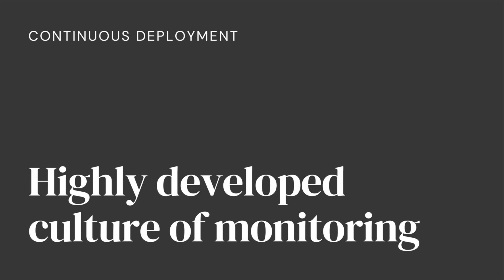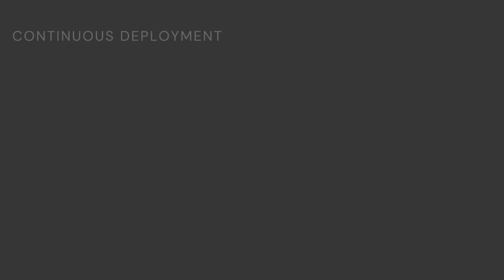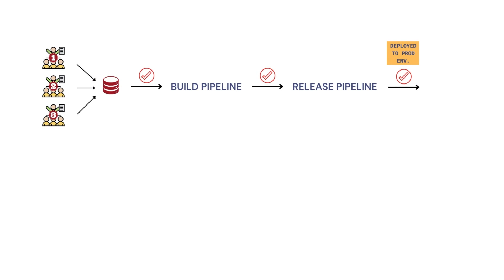With continuous delivery, the software can still be deployed to production at any time, but the business has complete control over when. Without this choice, the process is called continuous deployment. Continuous deployment requires a highly developed culture of monitoring, being on call, and having the capacity to recover quickly — a culture that is difficult to maintain and hence not an option for many companies. For this reason, when you hear people saying CI/CD, it is generally safe to assume they are referring to continuous delivery, not continuous deployment.